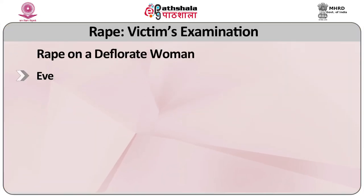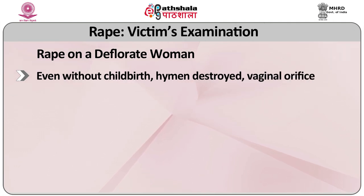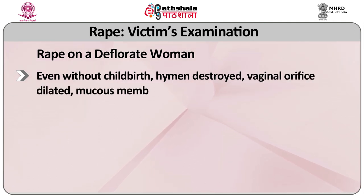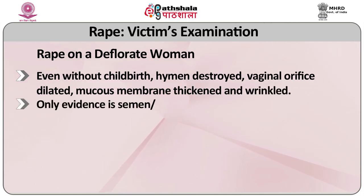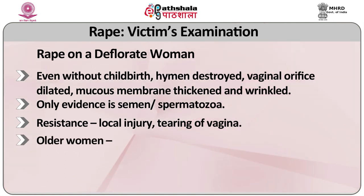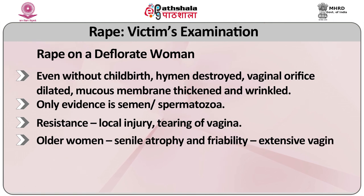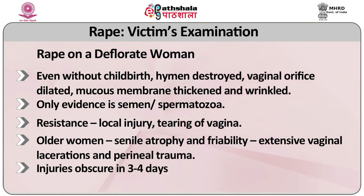Rape on a deflorate woman: even without childbirth, the hymen may be destroyed and the vaginal orifice dilated, with mucous membrane thickened and wrinkled. The only evidence may be semen and spermatozoa. In older women, vulval atrophy and friability cause extensive vaginal lacerations and perineal trauma. Injury signs subside within 3 to 4 days.